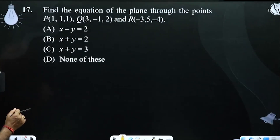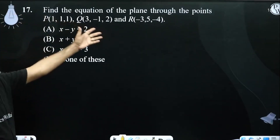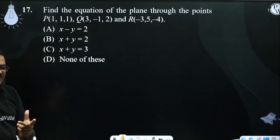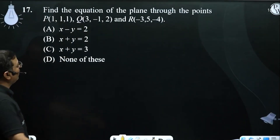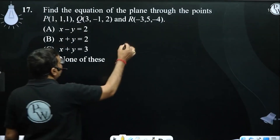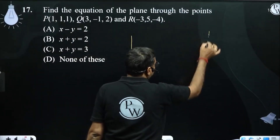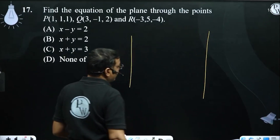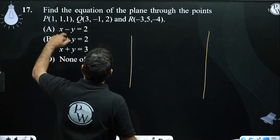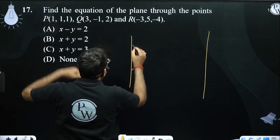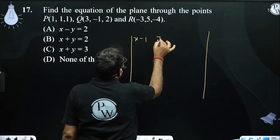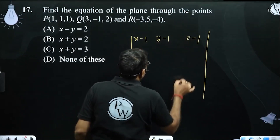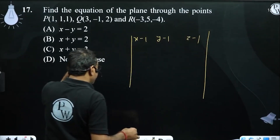Find the equation of the plane. We have 3 points from the plane, then we have 3 vectors, and 1 variable point x, y, z giving components x minus 1, y minus 1, and z minus 1.